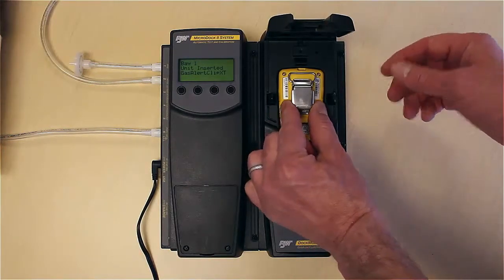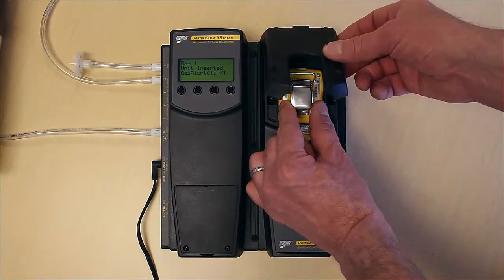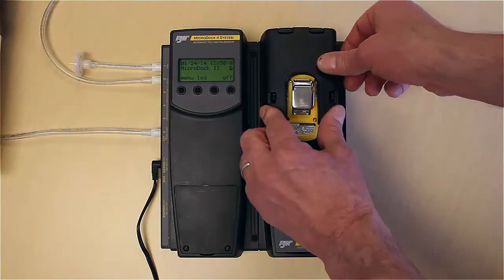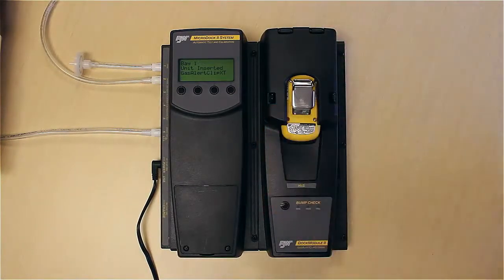Push forward on the detector to ensure the top connects with the top of the bay. Now lower and press down the lid until both release tabs click.